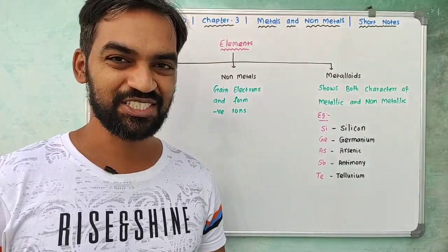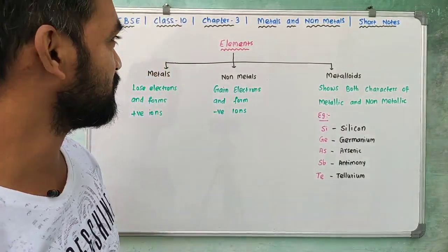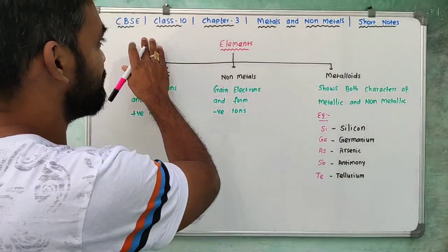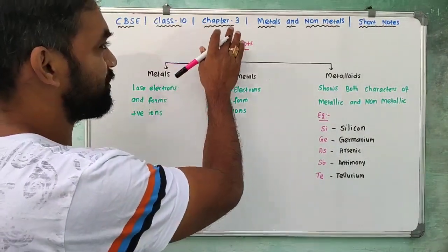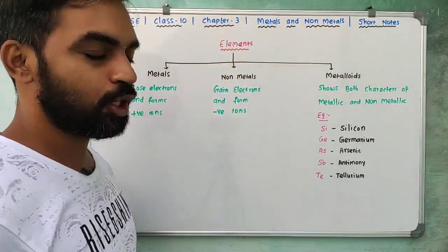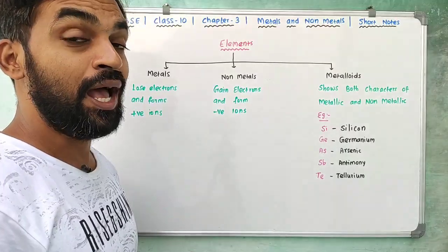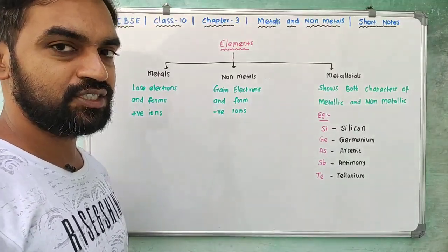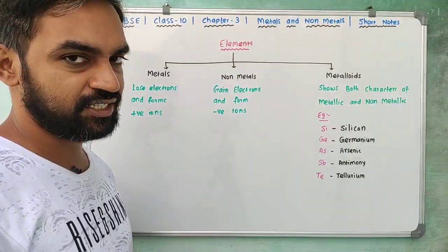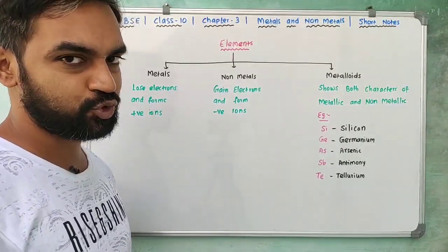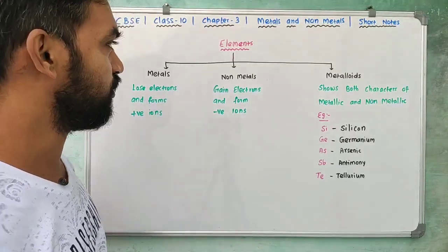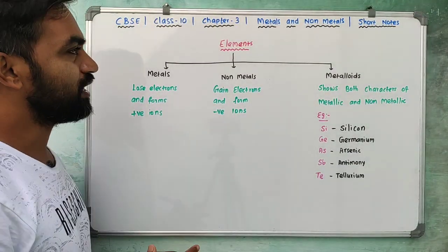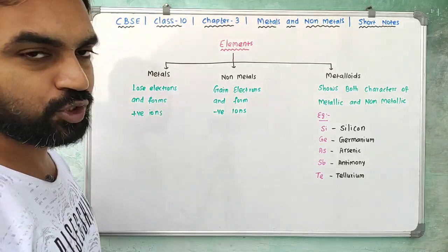Hi friends, welcome to Biology Simplified Tamil. I am your Siddhalanathan. This is CBSE Class 10 Chapter 3, Metals and Non-Metals, for TNACRT Tamil Nadu State Board students. It is very helpful to classify the metals and non-metals.